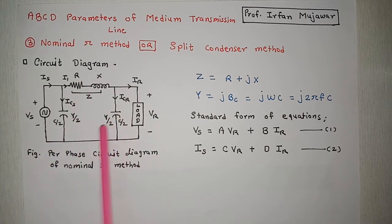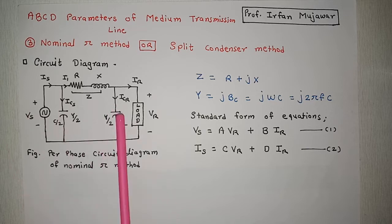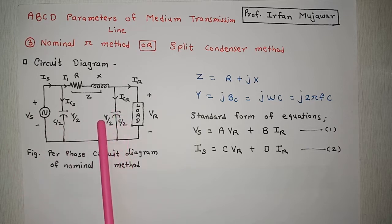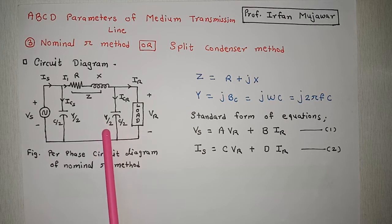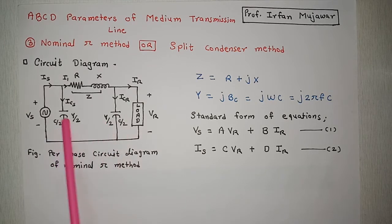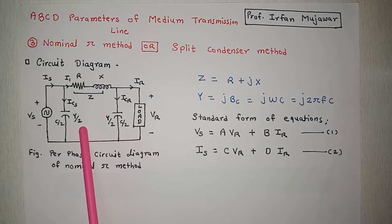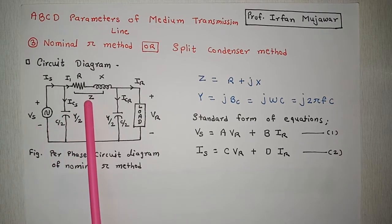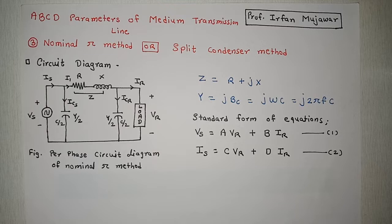Capacitances are also on a per-phase basis. Capacitance will have admittance given by Y. As this is C/2, it is written as Y/2. Similarly, as the other side is also C/2, that will also have admittance Y/2. Z is the series impedance of the transmission line.